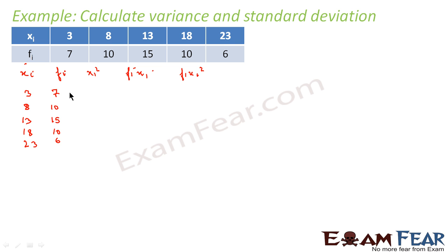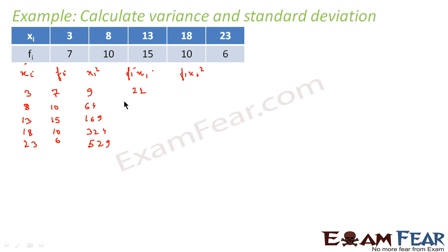First, let's find xi squared: 3 squared is 9, 8 squared is 64, 13 squared is 169. Then we find fi·xi by multiplying: 7 into 3 is 21, 10 into 8 is 80, 15 into 13 is 195, 10 into 18 is 180, and 6 into 23 is 138.